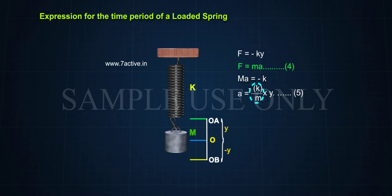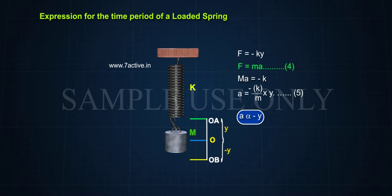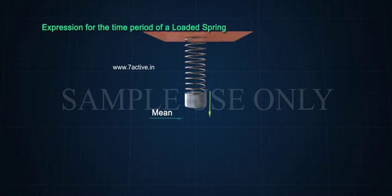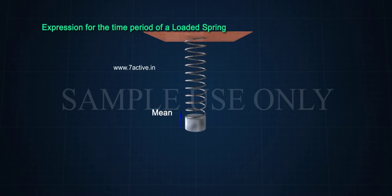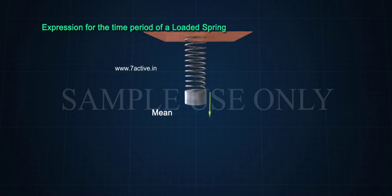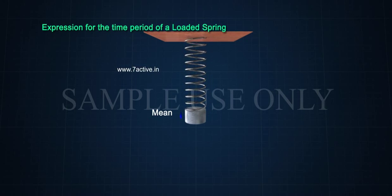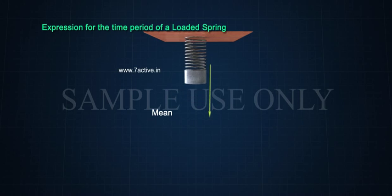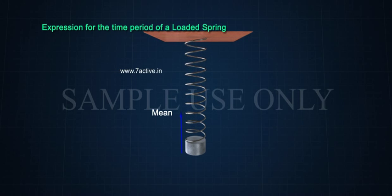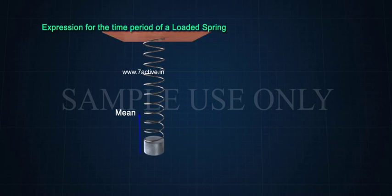Since K and M are constants, we can write A is directly proportional to -Y. That is, acceleration is directly proportional to displacement and it is directed towards the mean position O. Hence, the oscillations of a loaded spring are simple harmonic.